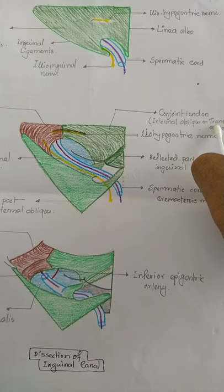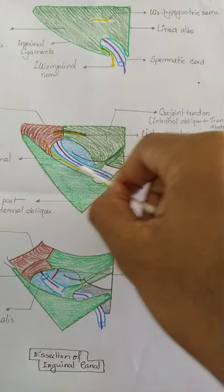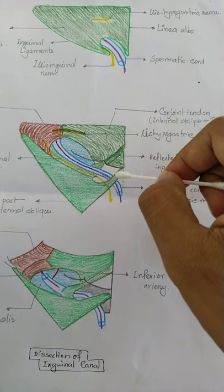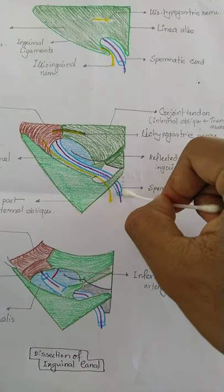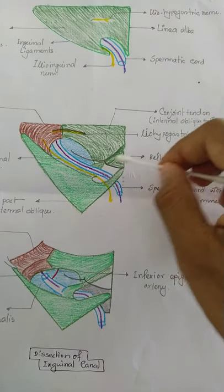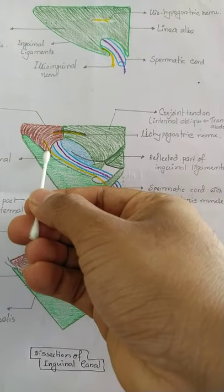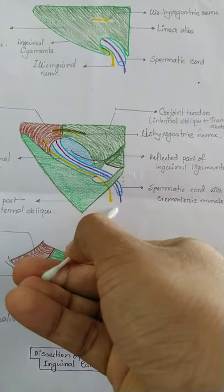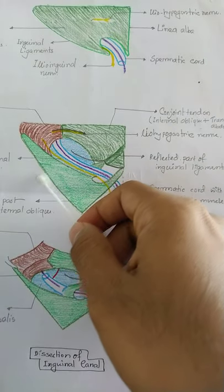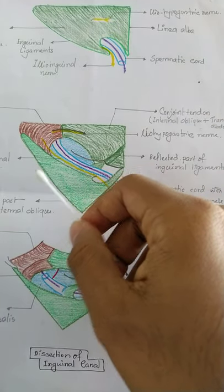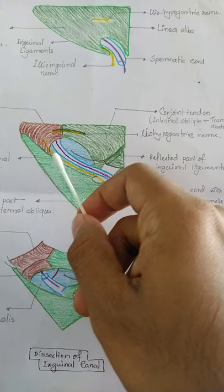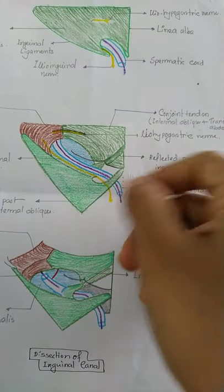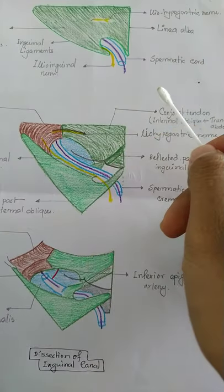The contents of the inguinal canal include the spermatic cord along with the testicular artery, pampiniform plexus, lymphatics, and fat. The ilio-inguinal nerve also passes through the inguinal canal. Two other nerves partially pass through the inguinal canal: the ilio-hypogastric nerve and the genital branch of the genitofemoral nerve.